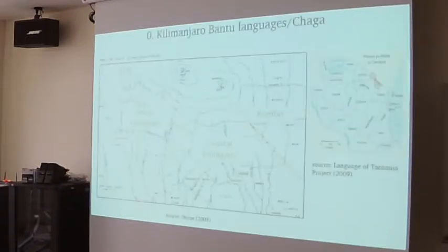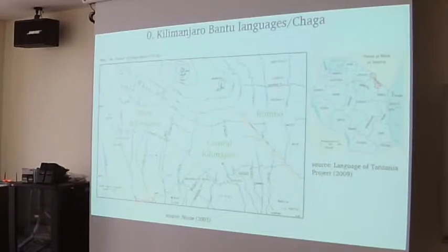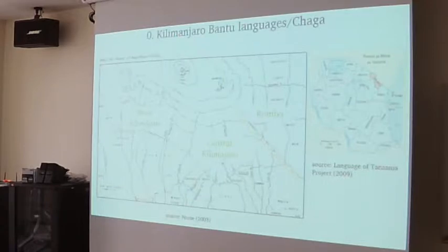Chaga is also known as Kilimanjaro Bantu languages as a cover term, because there are Chaga people and Chaga languages, but also languages related to Chaga spoken by non-Chaga people. As a cover term we use Kilimanjaro Bantu languages. There are about 20 varieties identified as Kilimanjaro Bantu, sub-classified into three sub-groups: West Kilimanjaro, Central Kilimanjaro, and Rombo varieties.